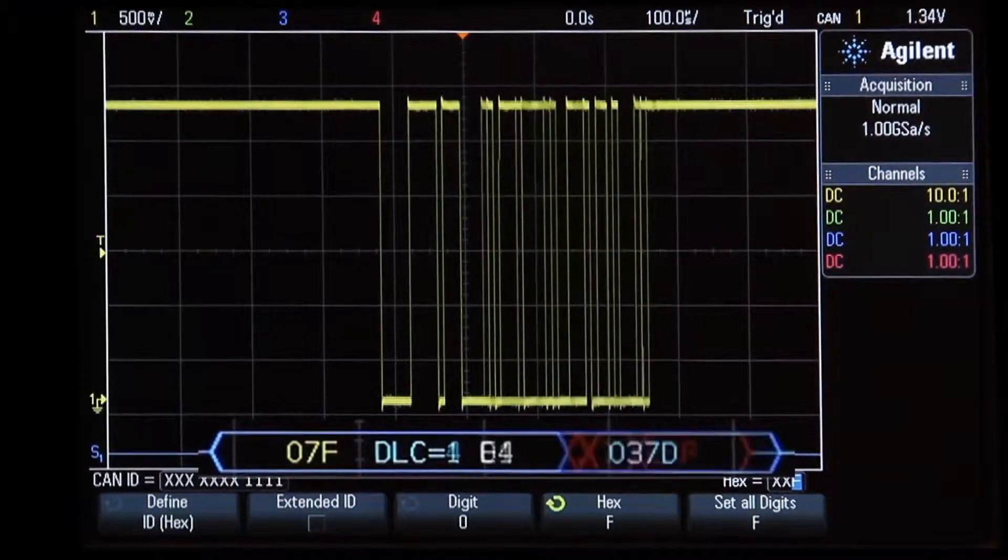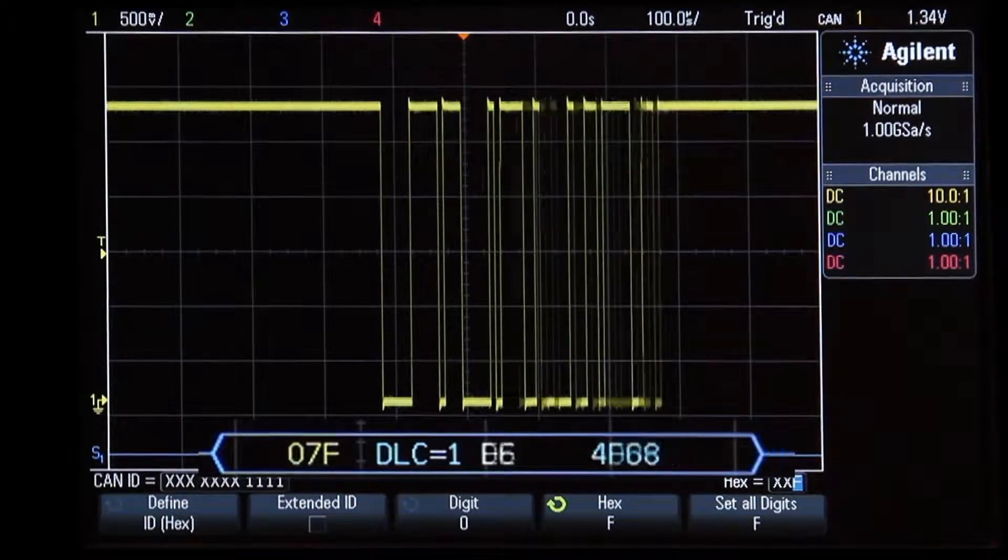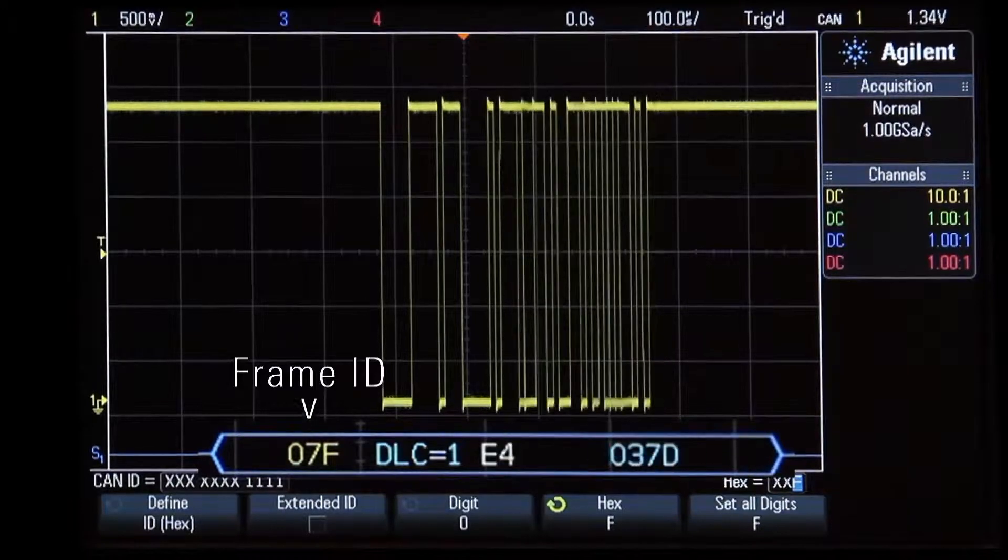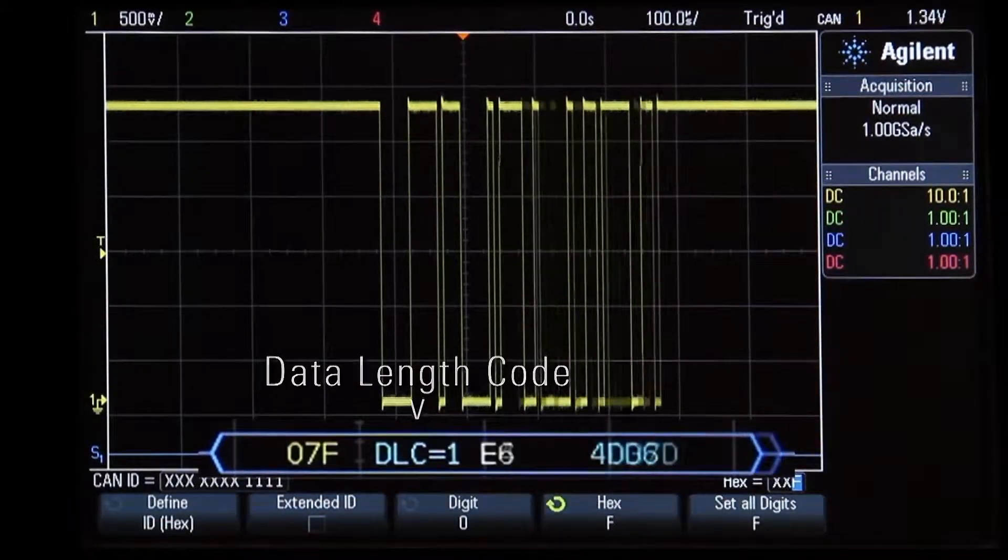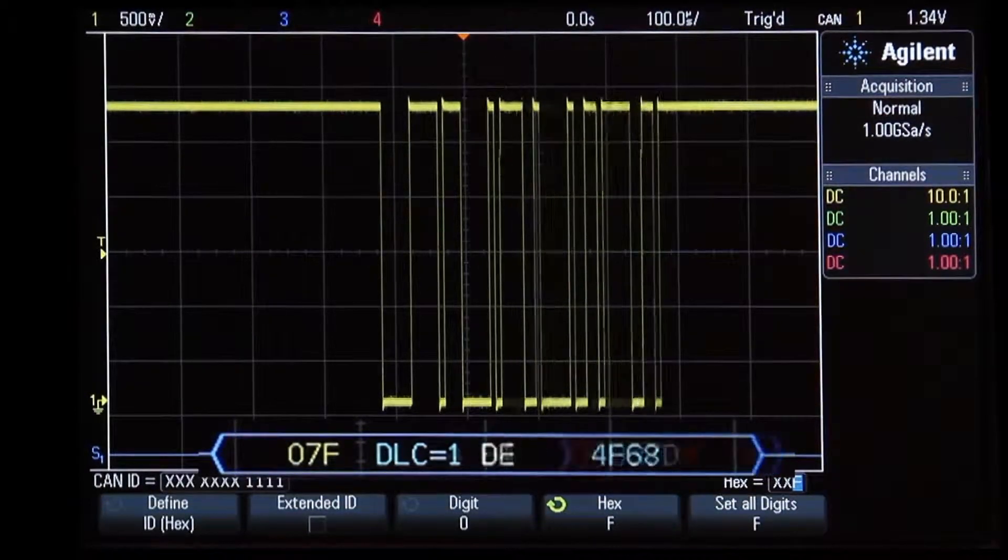What you see below the waveform is the time-correlated decode trace. This particular data frame has a frame ID of 07F, followed by a data length code, followed by one byte of data, and finally followed by the CRC.